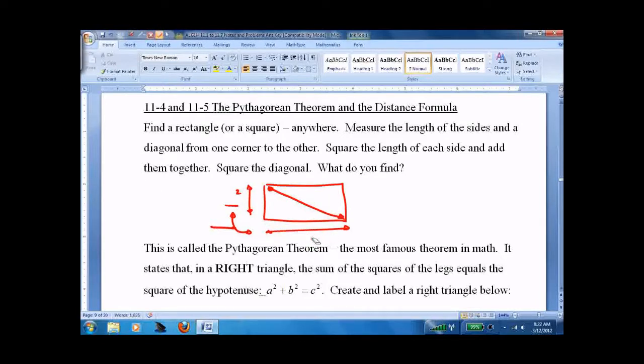Most of you probably wimped out, that's okay. But if for example you found that this was 5 inches long, this was 12 inches long and this was 13 inches long, you would have found out that 5 squared plus 12 squared is 25 plus 144 is 169 which is exactly what 13 squared is.